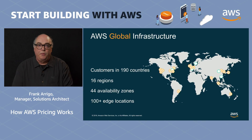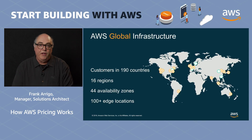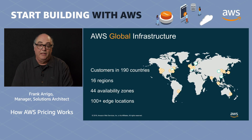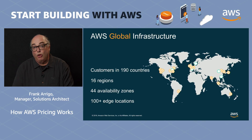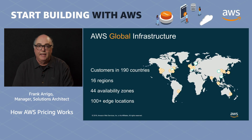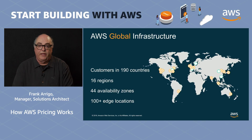All of these services sit on top of our global infrastructure, which comprises 16 regions, 44 availability zones and 100-plus edge locations for our content delivery network. With AWS, you can go global in minutes, as deploying in Sydney works exactly the same as deploying in the US or Europe.